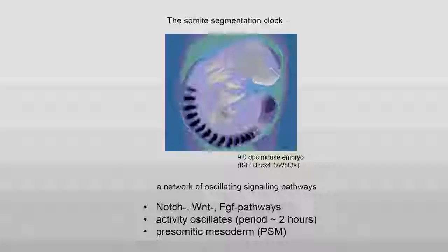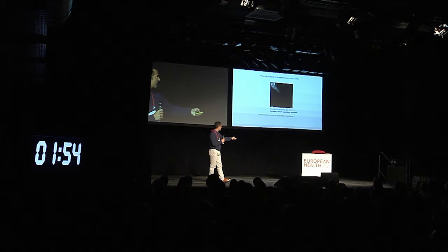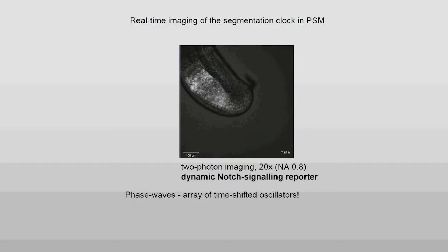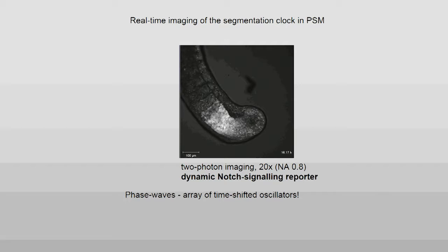We developed tools to visualize this clock, to see the clock in real time. In this movie, you will see the activity of the clock, which is not only oscillatory, but you see waves of activity sweeping through the embryo in a very rhythmic and coordinated fashion. These waves are phase waves and have very interesting features. We want to understand what is their function and what is their origin.